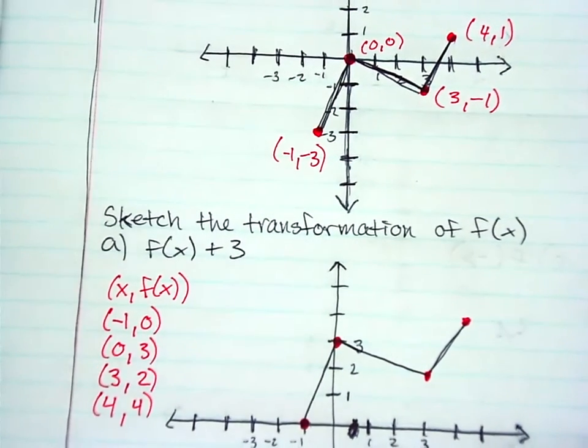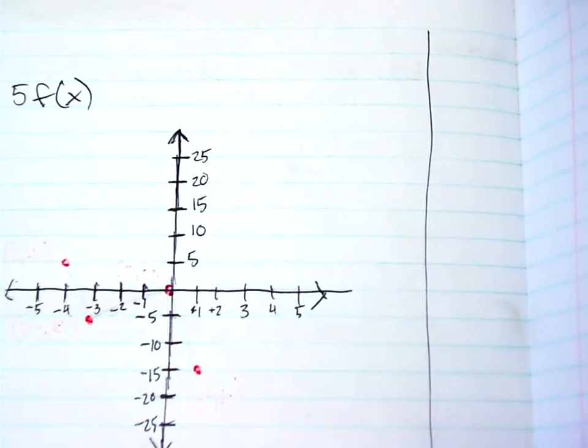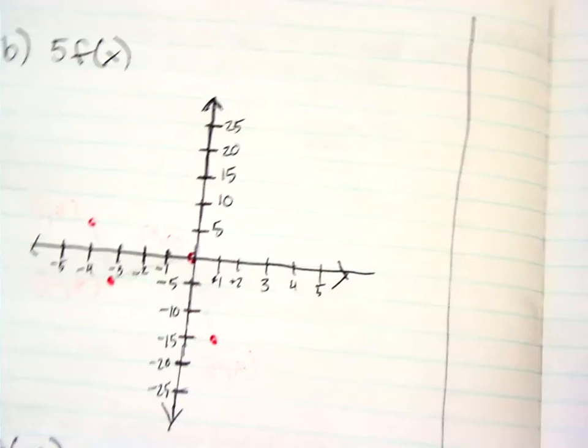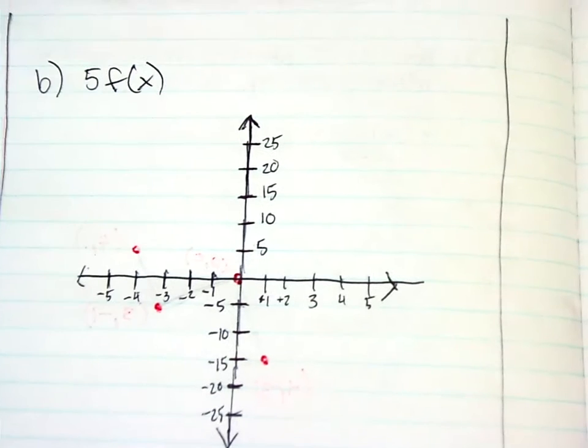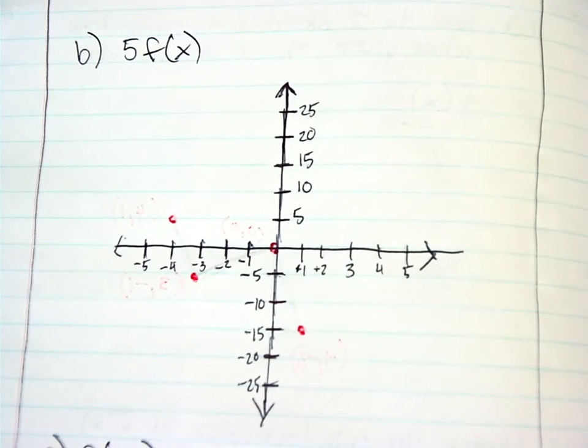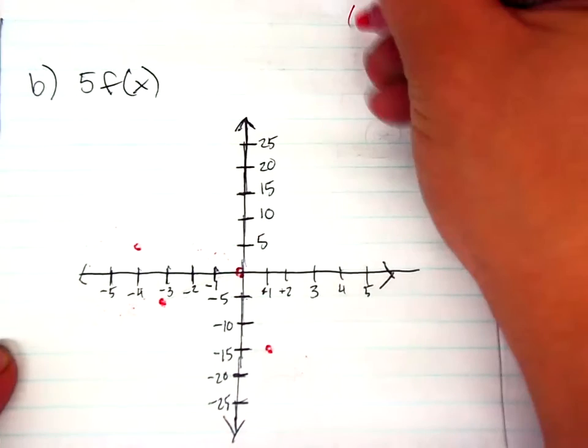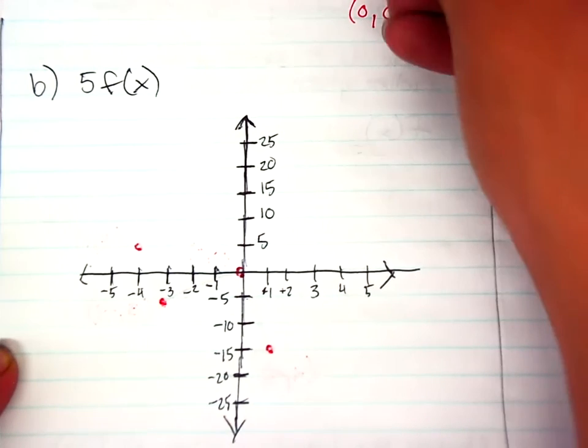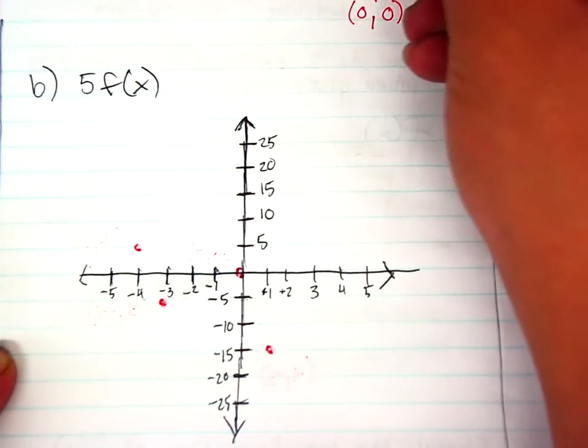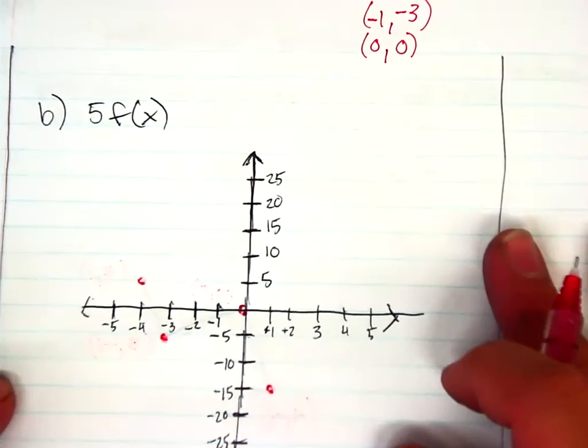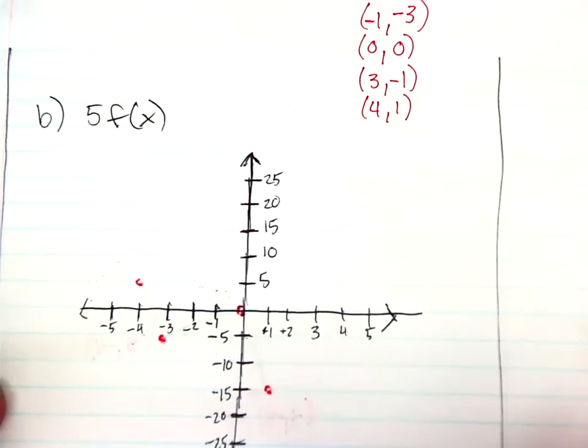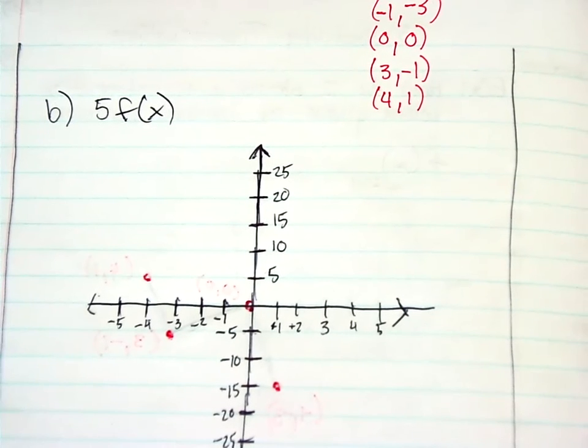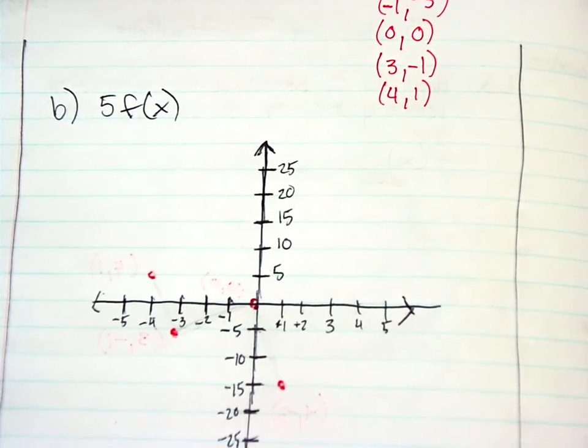We are going to need a lot of room to make sure that we see these transformations. I already have my graphs pre-set up. So, it's going to be helpful. Take a moment. Pause if you need to. And copy down the same graph and the same scale. As you do so, I'm actually going to write down the coordinates of the original f(x) function so I don't have to flip the page and find out what I was supposed to work with. So, (-1, -3), (0, 0), (3, -1), and (4, 1). So again, pause the video if you need to. But we're going to go ahead and start the transformation of this function.